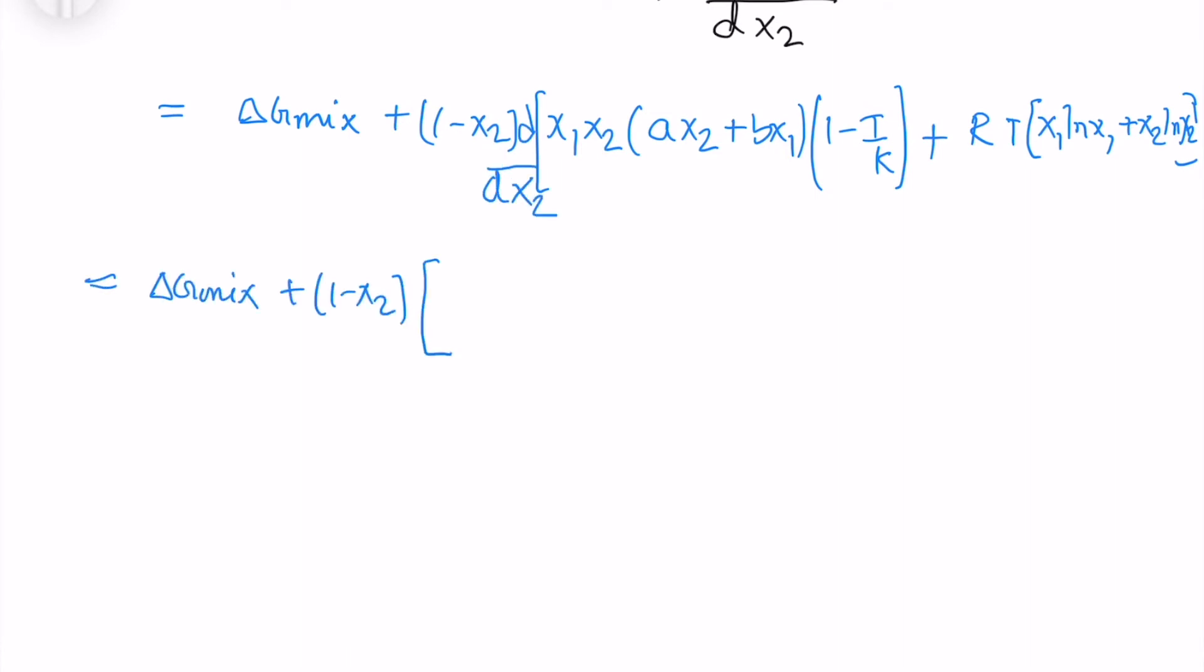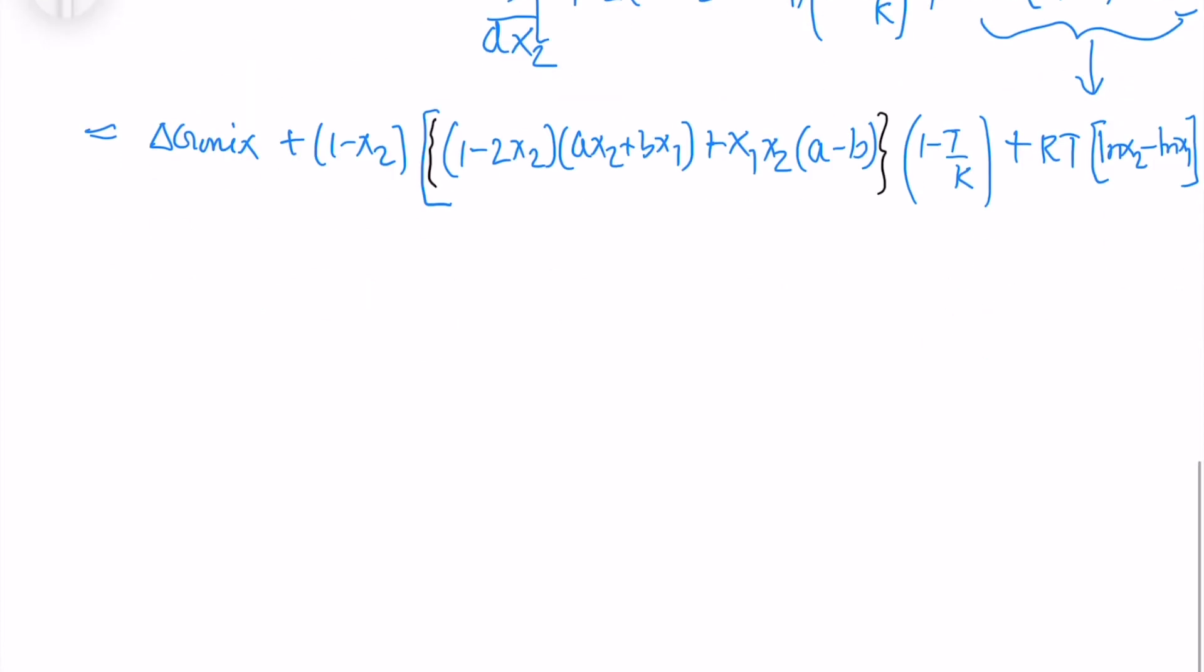So when I take the differential, it looks of this form. So first I differentiate x1, x2. Then I differentiate A x2, B x1. Then I differentiate the configurational entropy, which is RT ln x2 and minus ln x1.